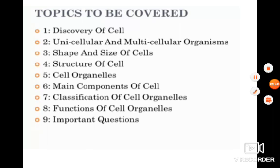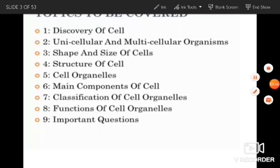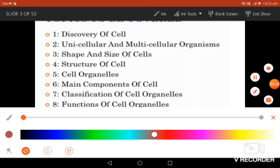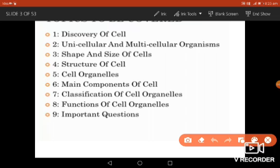The topics we are going to cover in this chapter are: discovery of cells, organization of the organism (unicellular or multicellular organisms), shape and size of cells, structure of cell organelles, main components of the cell, classification of cell organelles, functions of all these cell organelles, and important questions.